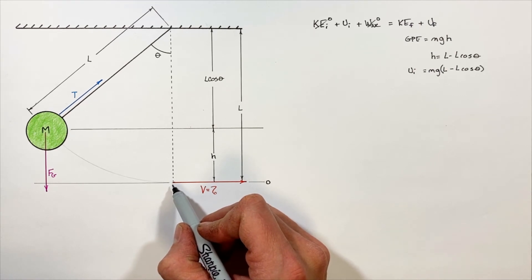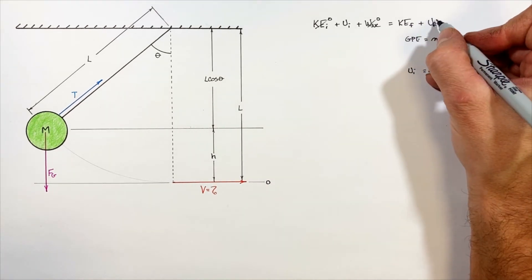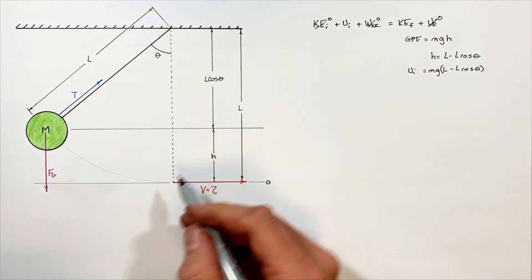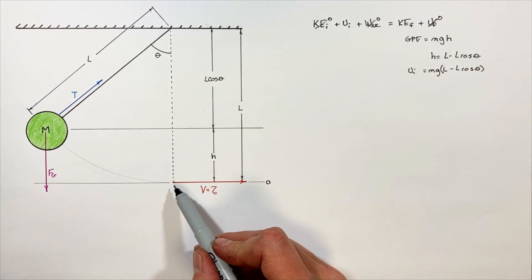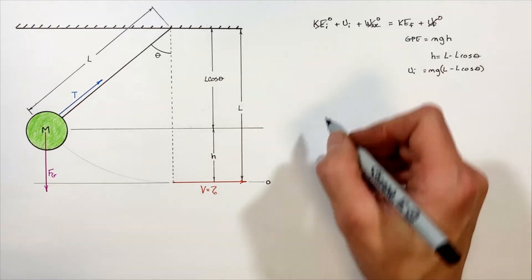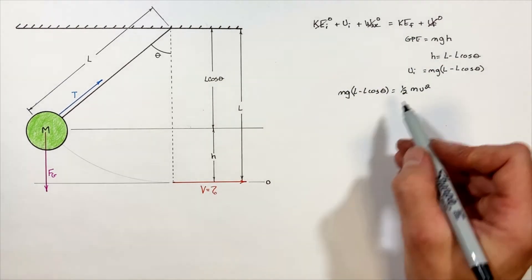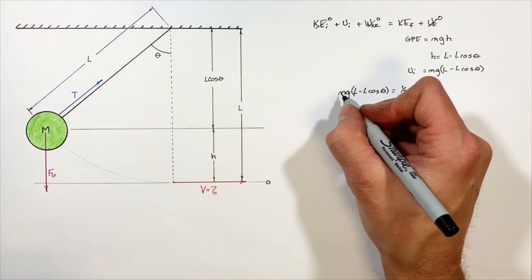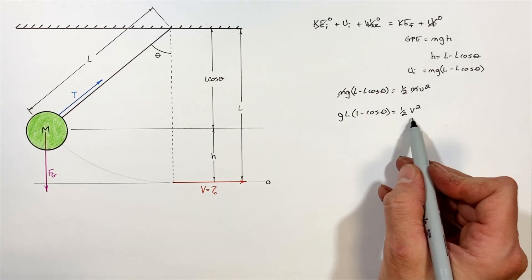Only gravity is doing work to turn our initial gravitational potential into kinetic energy here at this lowest point. At the lowest point in the arc, there is no gravitational potential energy left. The mass will have given up all of its height and therefore all of its gravitational potential. Ultimately what we have is the conversion of gravitational potential into kinetic, and you'll notice the mass cancels out.